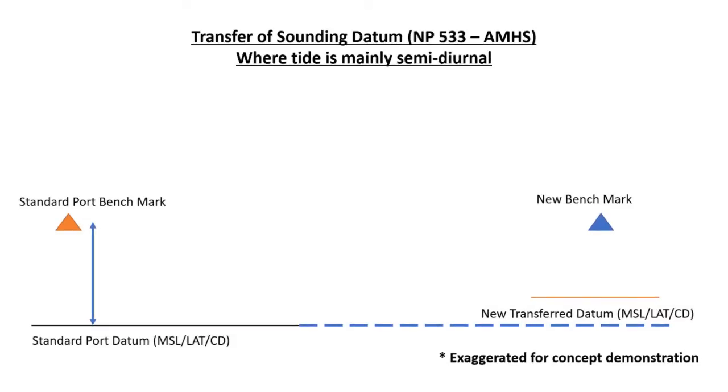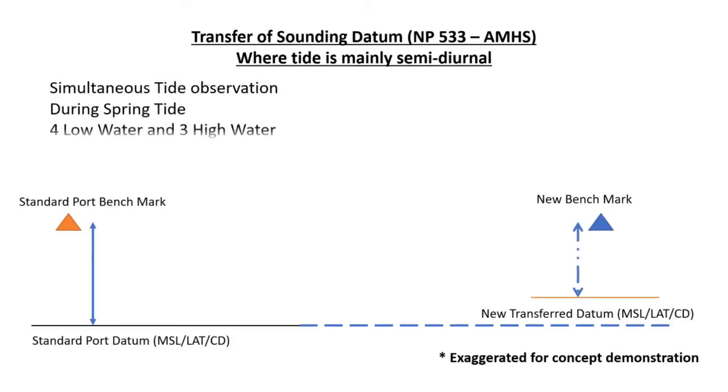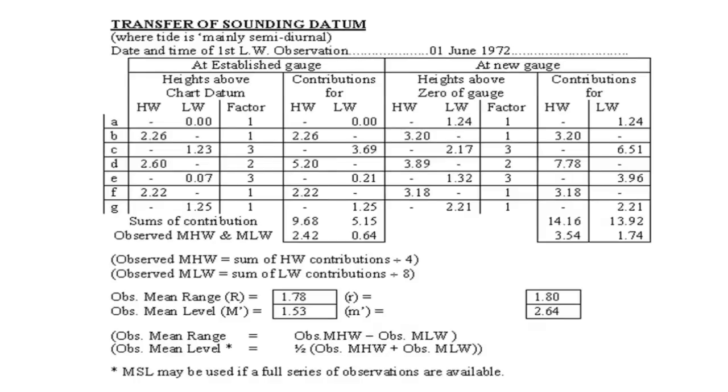One way of doing this is by observing simultaneous tide at both the established station and the new station. For this, you need to observe 4 low water and 3 high waters and that also during the spring tide. Then using NP-533 form or the transfer of sounding datum, you can calculate and establish a new datum line at the new benchmark.